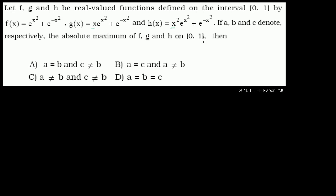Then they tell us that a, b, and c denote respectively the absolute maximum of f, g, and h on the interval. So a is the maximum of f, b is the maximum of g, and c is the maximum of h. Then they have a bunch of choices that compare these maximum values.